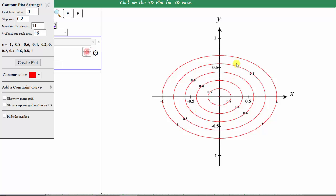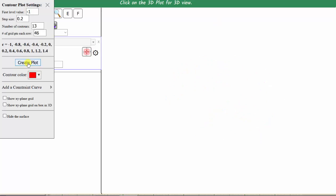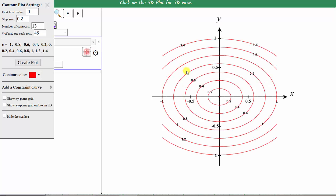If we wanted to have additional level curves, we could change the number of contours. Let's try 13, and we will now get two more level curves after we click create plot, which we see here.